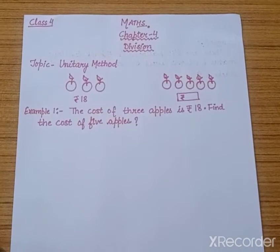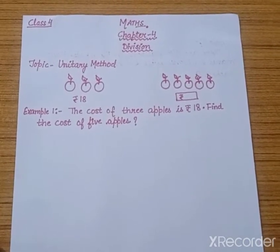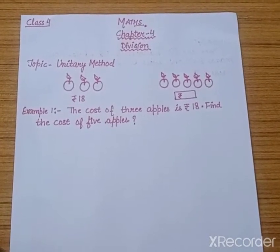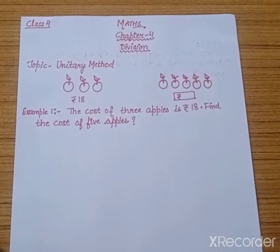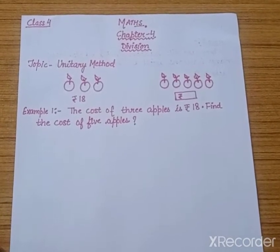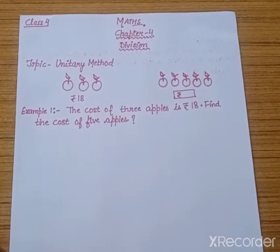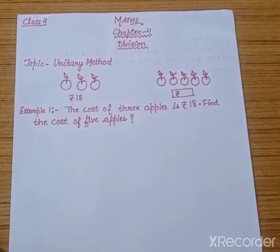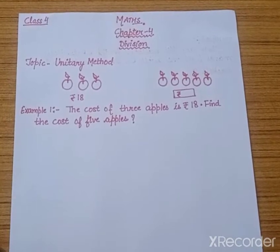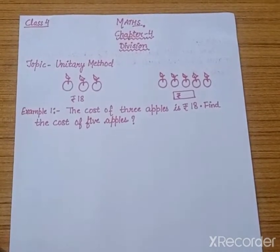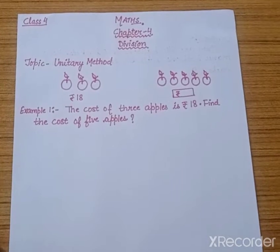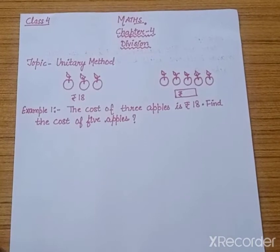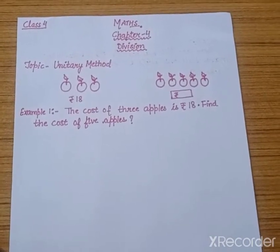Before understanding the Unitary Method, we should know what is the meaning of Unitary. The word Unitary has come from the word Unit, and Unit means 1. So in this method, what we have to do is we have to find the value of 1 unit. We will find the value of 1 unit by the division process.